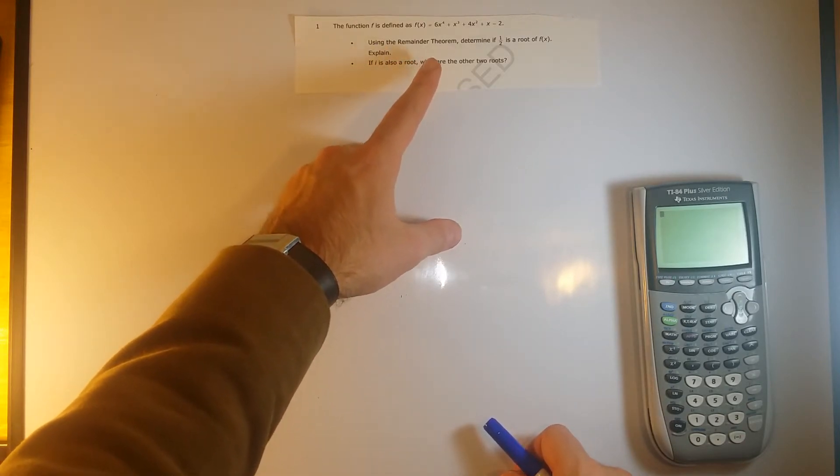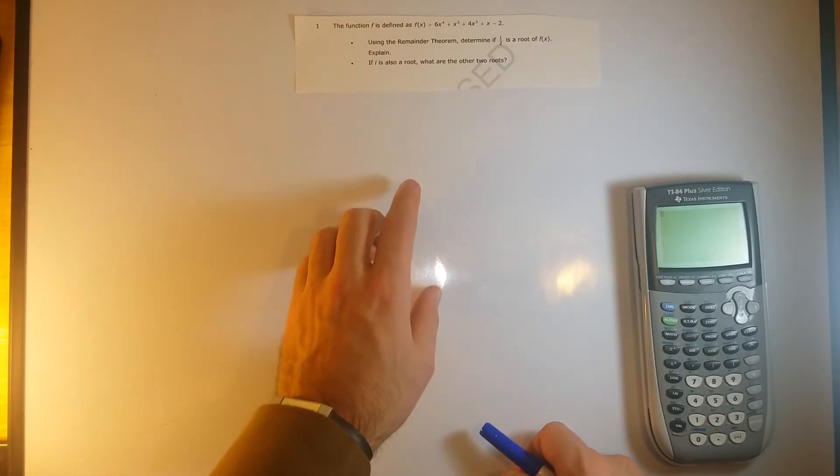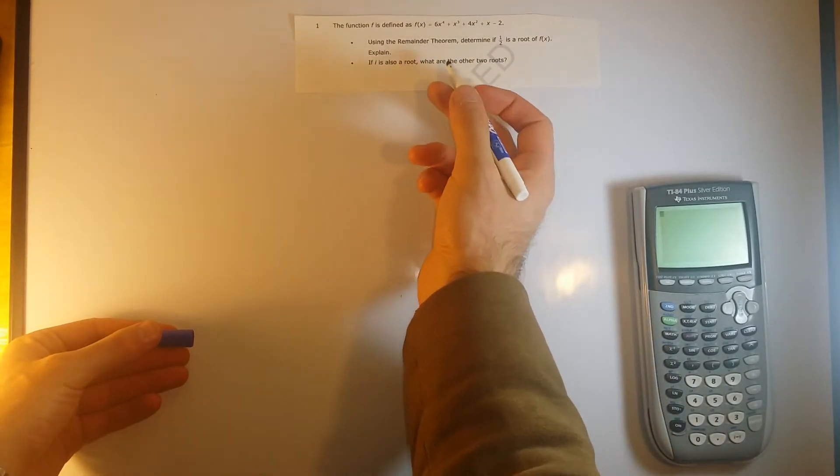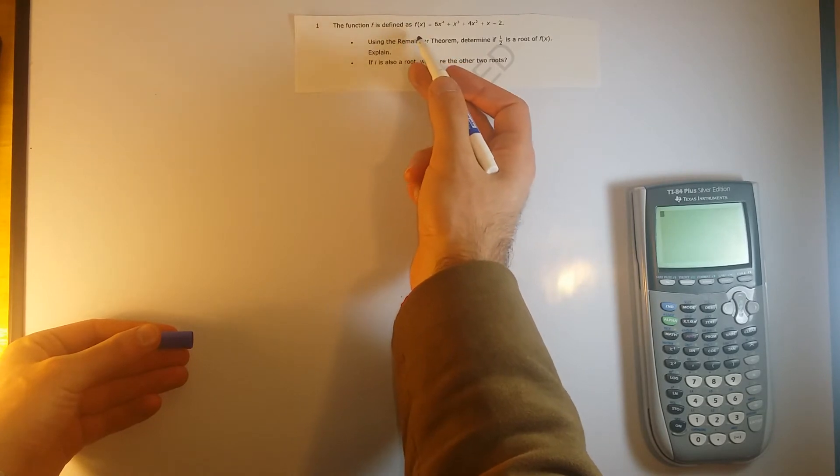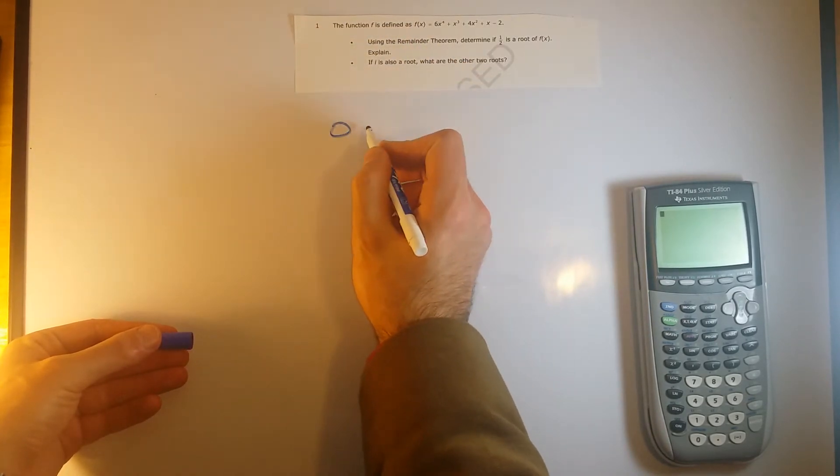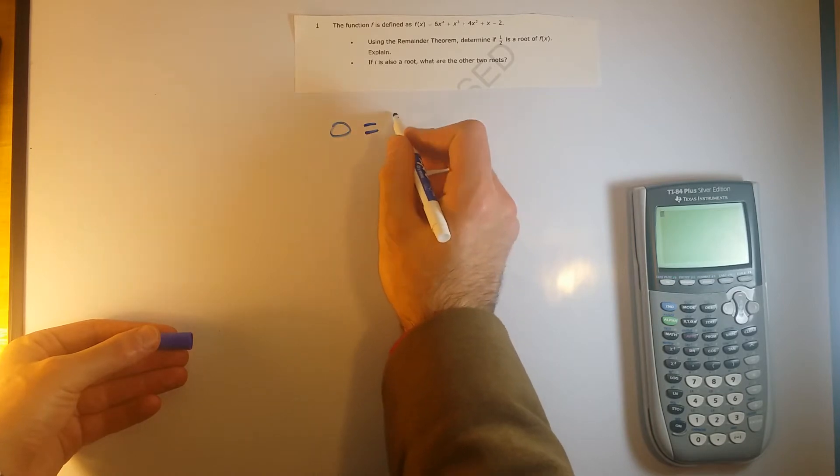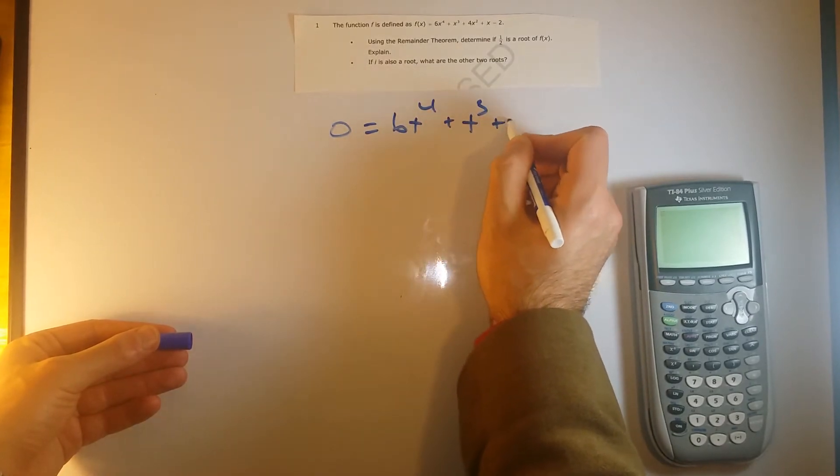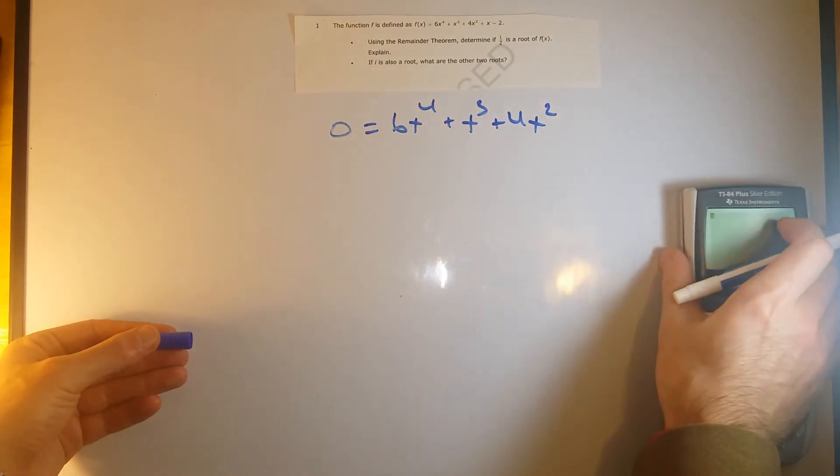Use the remainder theorem, determine if 1 half is a root of f of x, explain. So with determining roots, the root is just basically wherever the output is 0, so wherever f of x equals 0. It's a root if this whole thing outputs to be equal to 0.